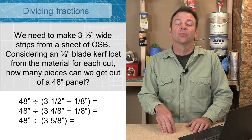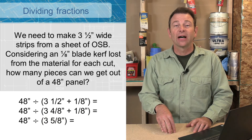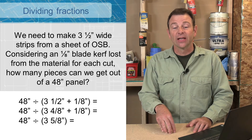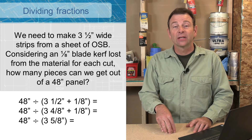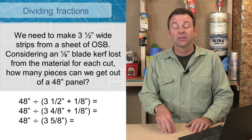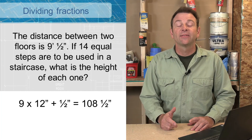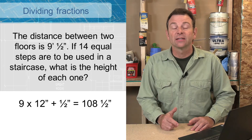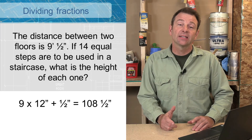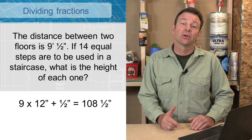Now that we've solved that part of the equation, we can divide 48 by three and five eighths, and that's going to give us a solution of 13 and a quarter pieces. Let's divide some more fractions — in this case the problem is going to be a staircase.